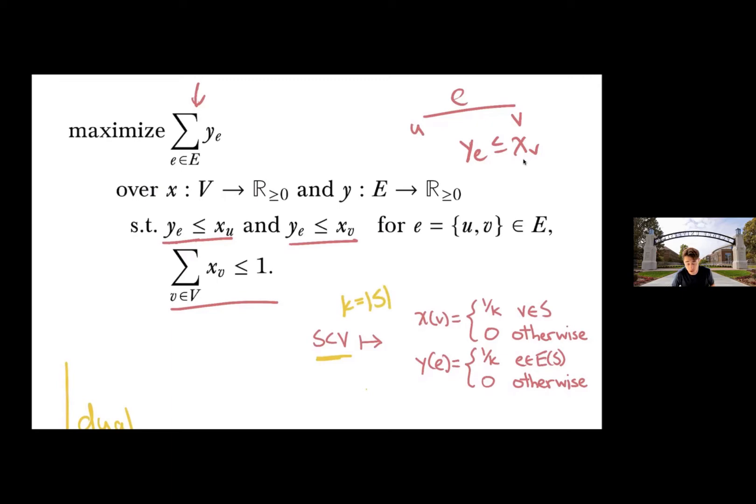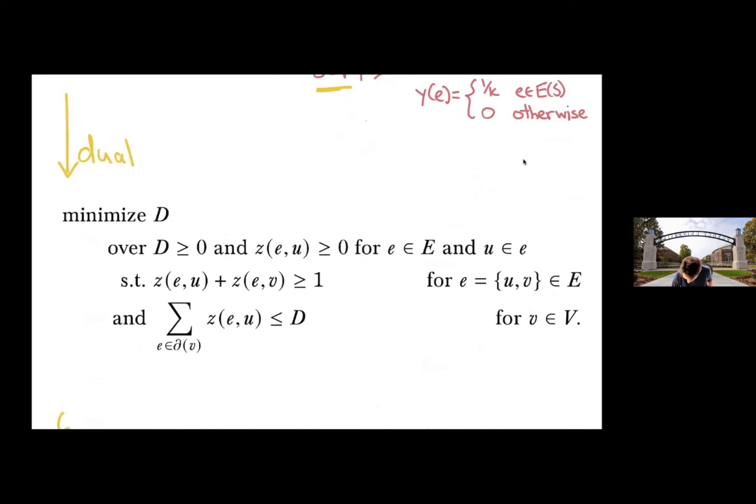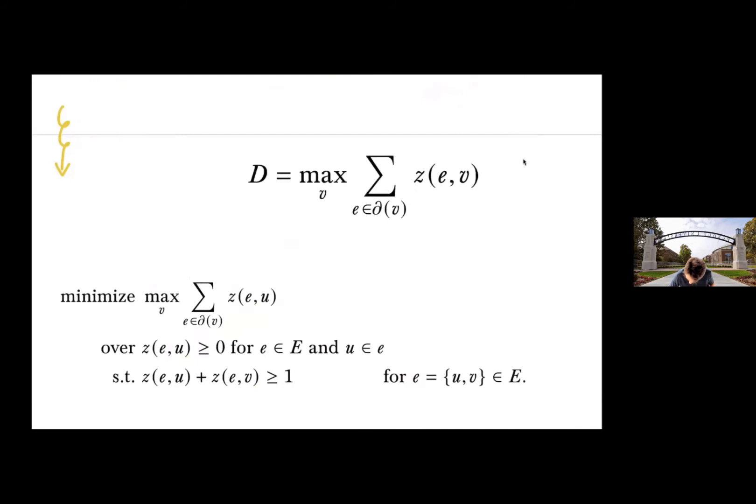If I take the dual of this LP, then we get the following. Now the main variables are indexed by an edge and an endpoint of the edge. And for every edge, I have to make sure that the two corresponding values are at least one. And then I have another parameter D, which is really tracking the maximum sum. This should be sum over all of the vertices. So I'm trying to allocate edges to their endpoints and minimize the maximum load. I think that's what we do here. We're always going to set D to be wherever that maximum load is.